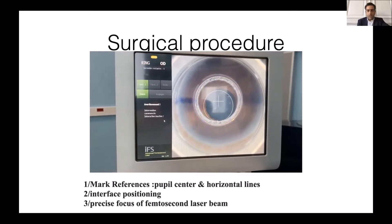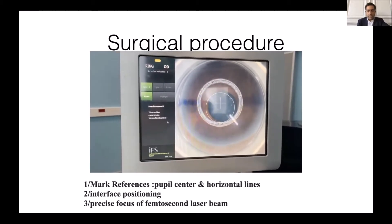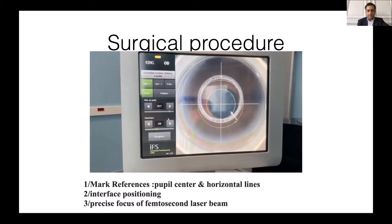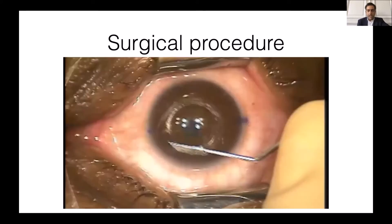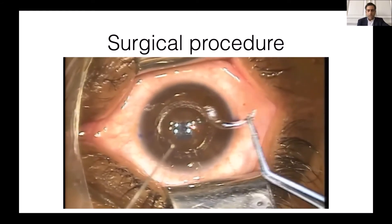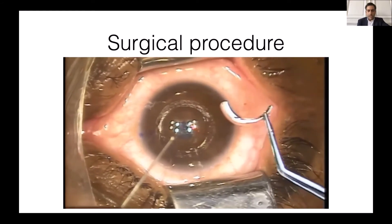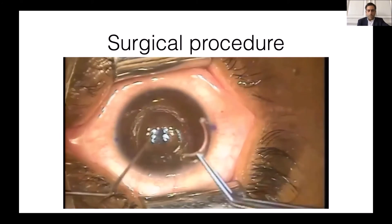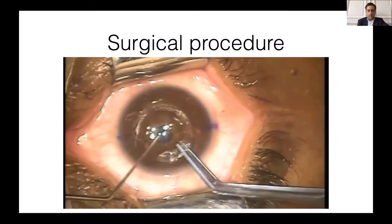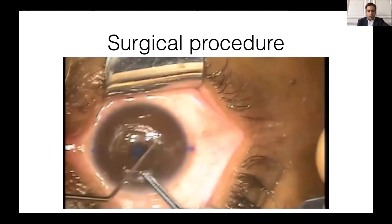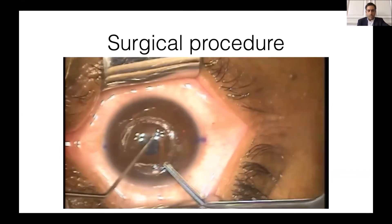In this case, I will be sure that there is no cyclotorsion of the axis. I think it is very important to perform the surgical procedure like this. We start first with a small dissection and we put the intracorneal ring segment in the correct axis because the femtosecond laser was done in the correct axis.